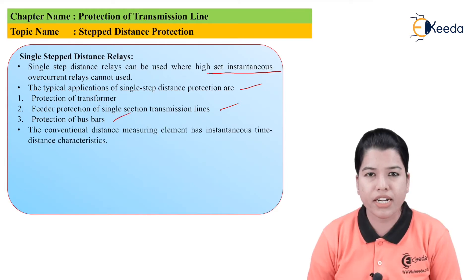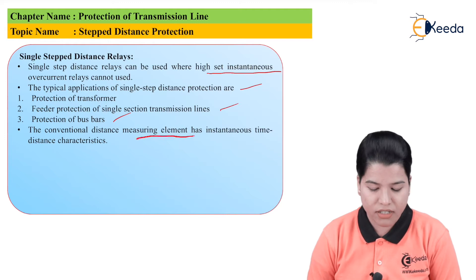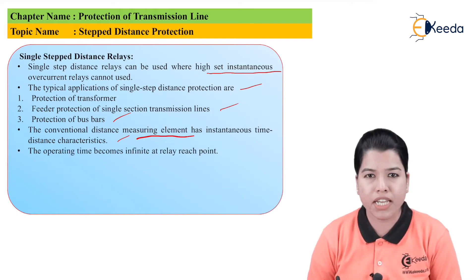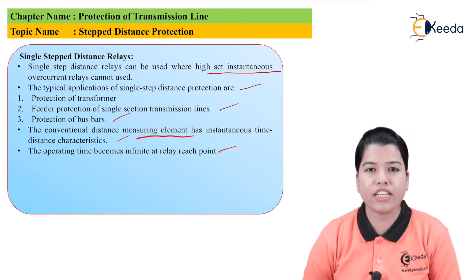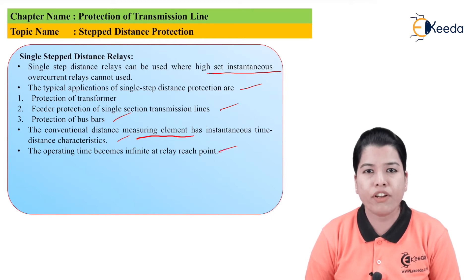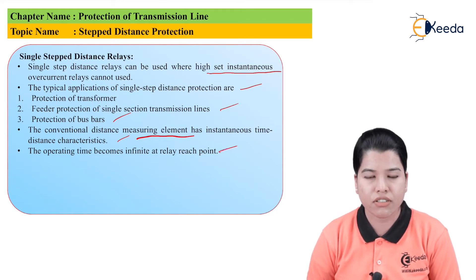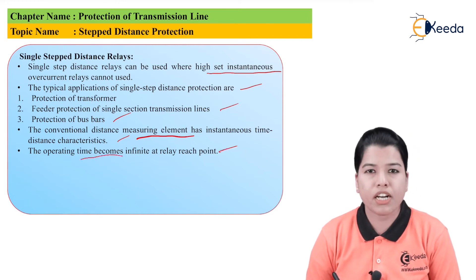The conventional distance measuring element has an instantaneous distance characteristic, meaning it operates instantaneously. The operating time becomes infinite when the relay reach point is reached. The reach is defined as the distance up to which the protective relay will operate, or the distance up to which the distance protection can be applied. Whenever this reach is exceeded, the operating time becomes infinite.